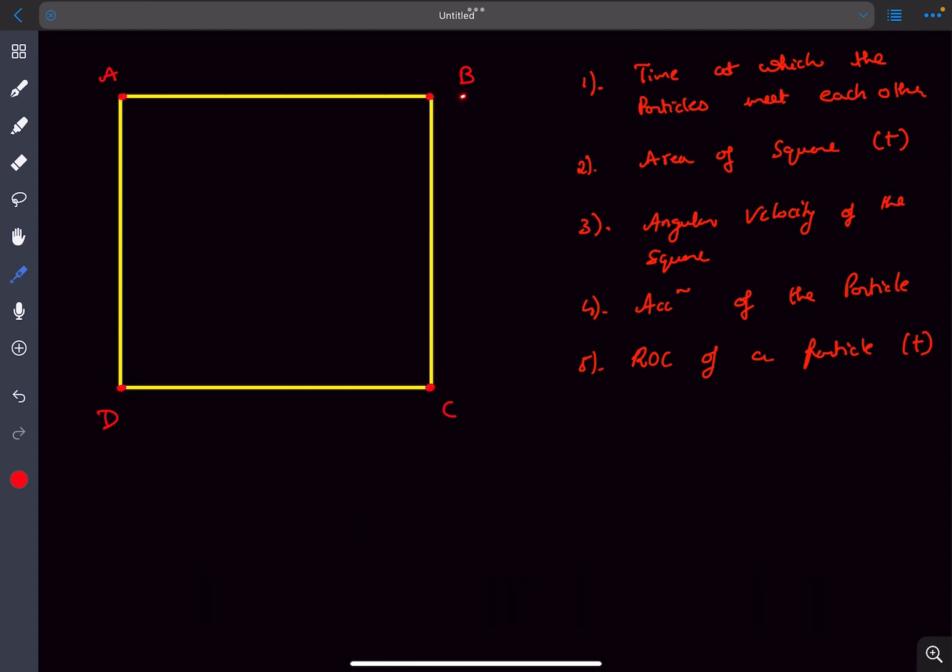The problem is that we have four particles A, B, C, and D who are chasing each other. The velocities are such that the velocity of A always points towards B, B towards C, C towards D, and D towards A. We have to find the time at which they meet, the area of the square, the angular velocity of the square, the acceleration of the particle, and the radius of curvature of the particle as a function of time. Let's discuss all these one by one.